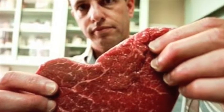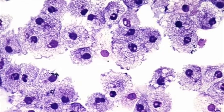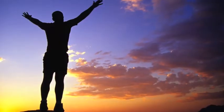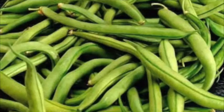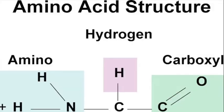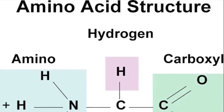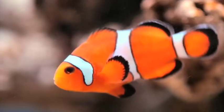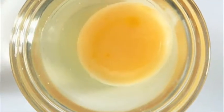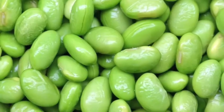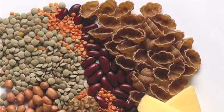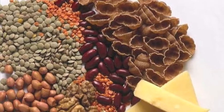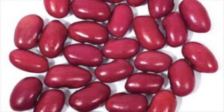Protein is needed for repair of cells and making new ones. It is also important for growth and development during childhood, adolescence, and pregnancy. There are two types of protein: complete and incomplete. Complete protein contains all nine essential amino acids and includes meat, fish, poultry, eggs, milk products, and soybeans. Soybean is the only plant considered to be a complete protein.